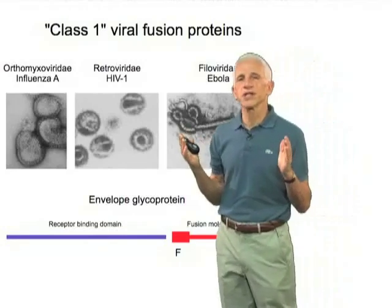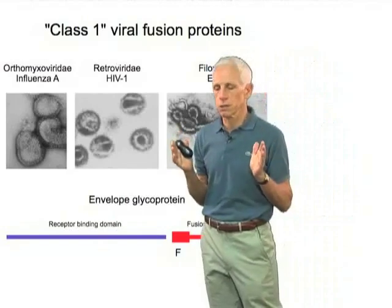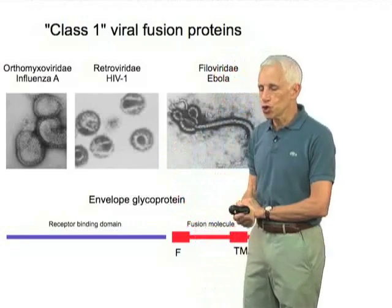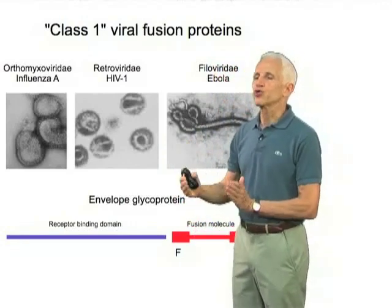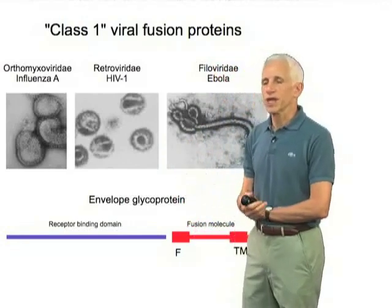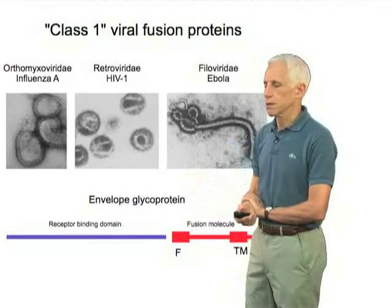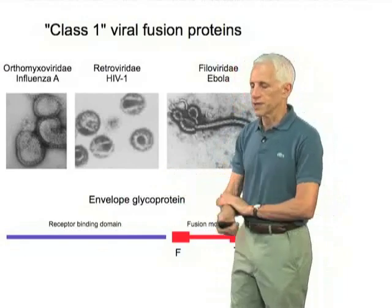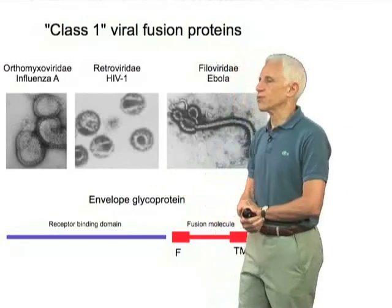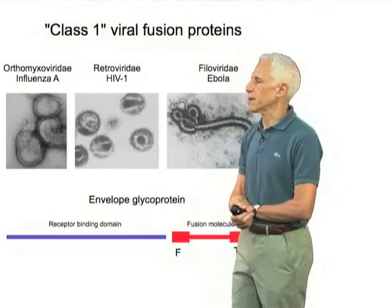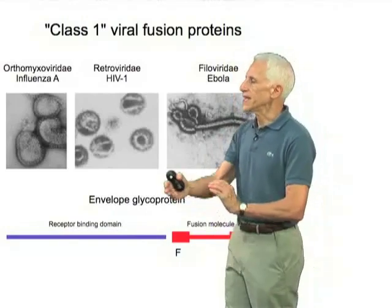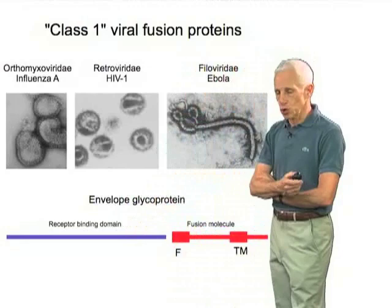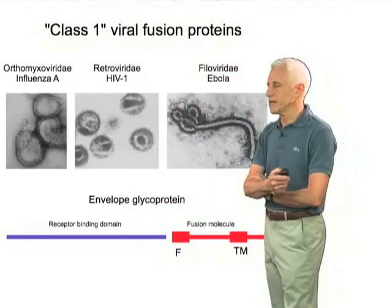These proteins are synthesized as a precursor, which is cleaved, usually en route to the cell's surface by a protease in the late compartments of the secretory pathway — furin, for example — into an N-terminal element, which is usually a receptor binding domain.